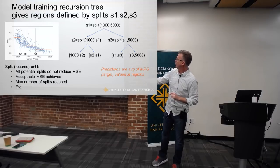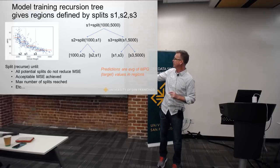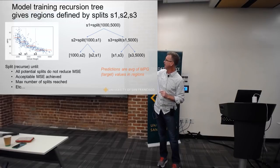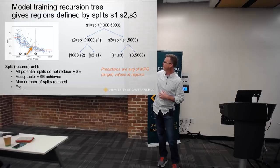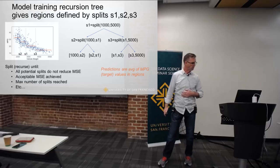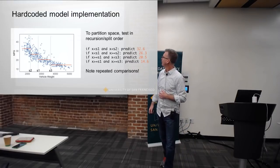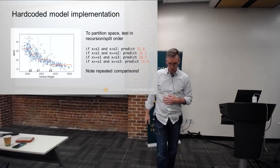The results of these ranges give me splits — from the left to S2, then from S2 to S1. The predictions are simply the average of all miles per gallon for samples in each range of features.